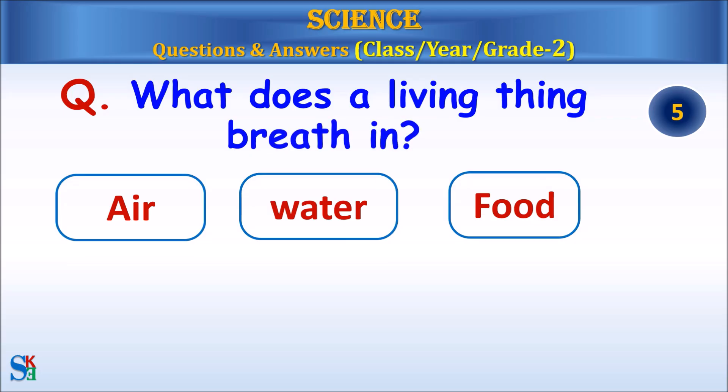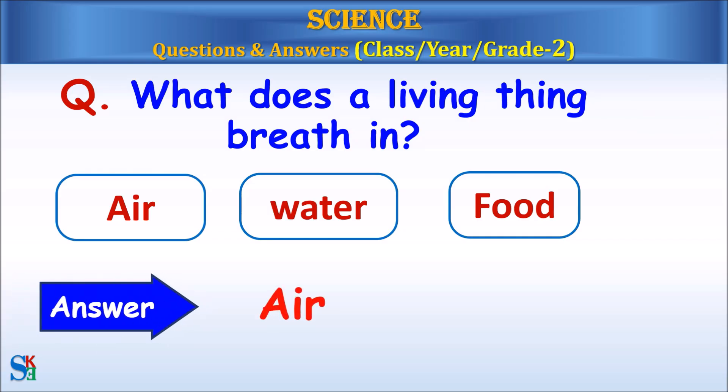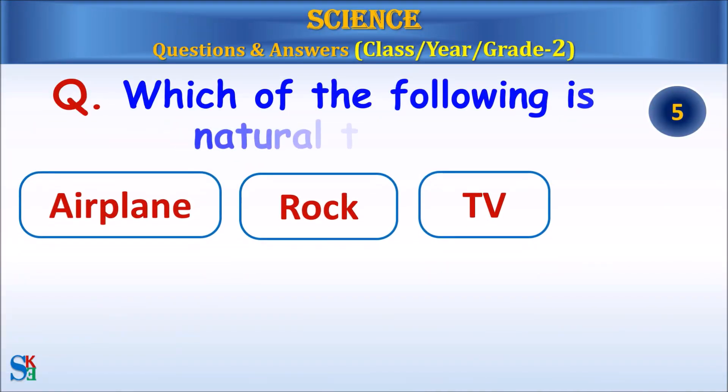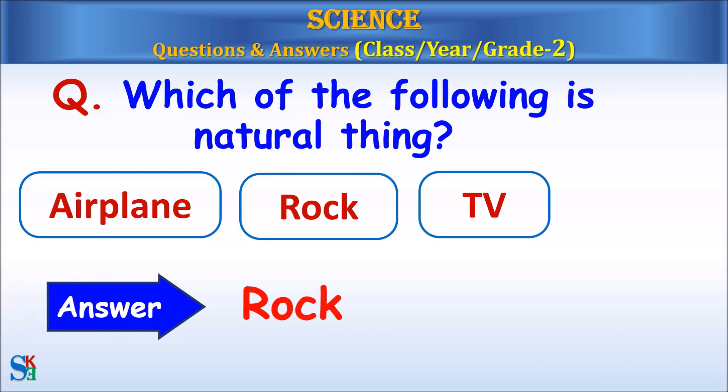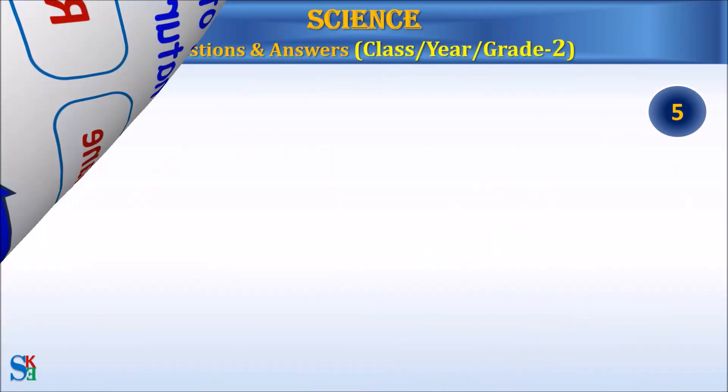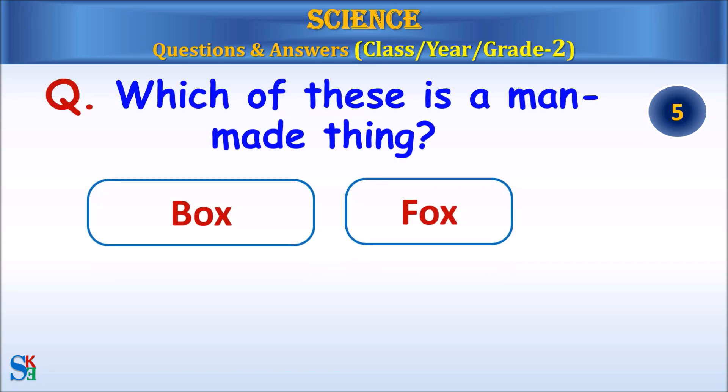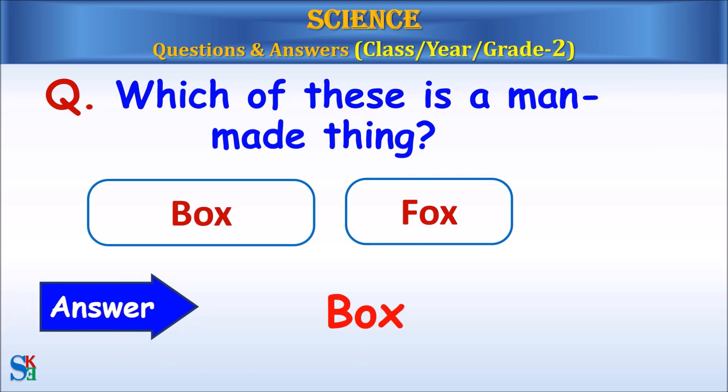What does a living thing breathe in? Air, water or food? Answer, air. Which of the following is natural thing? Aeroplane, rock or TV? Answer, rock. Which of these is a man-made thing? Box or fox? Answer, box.